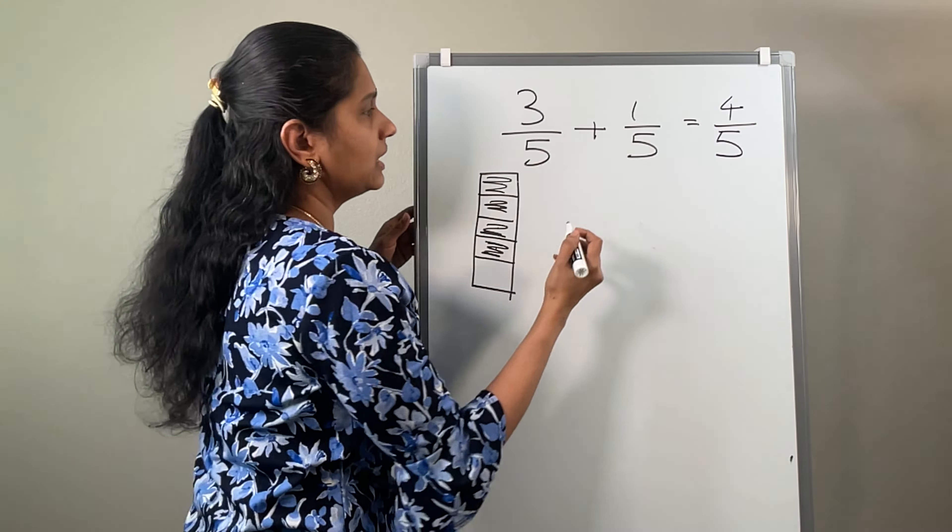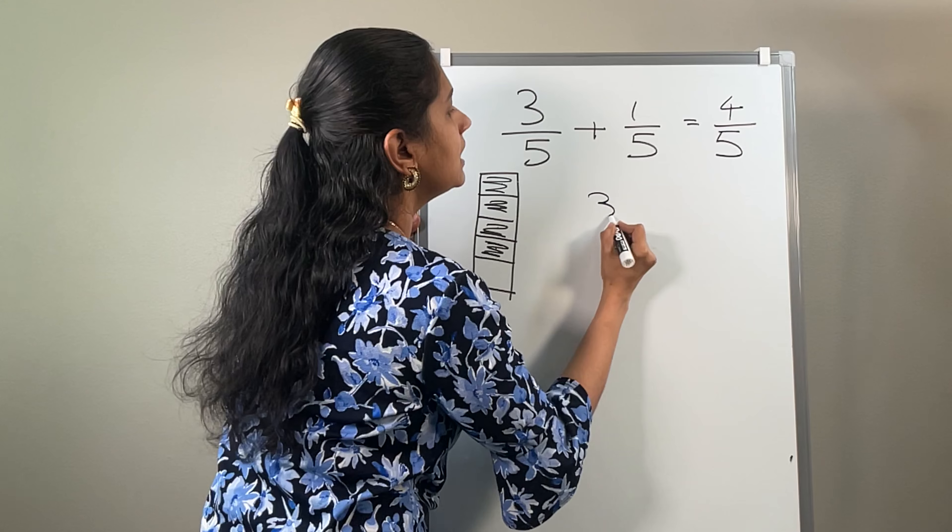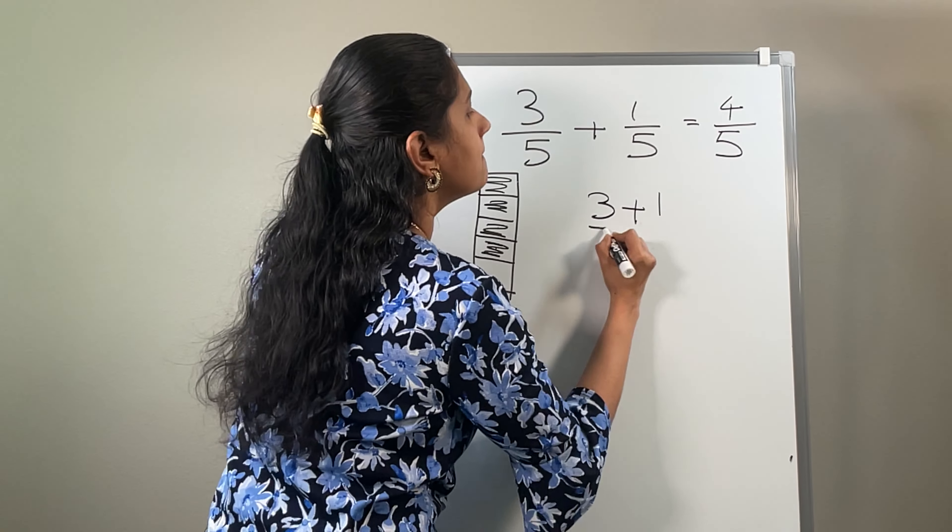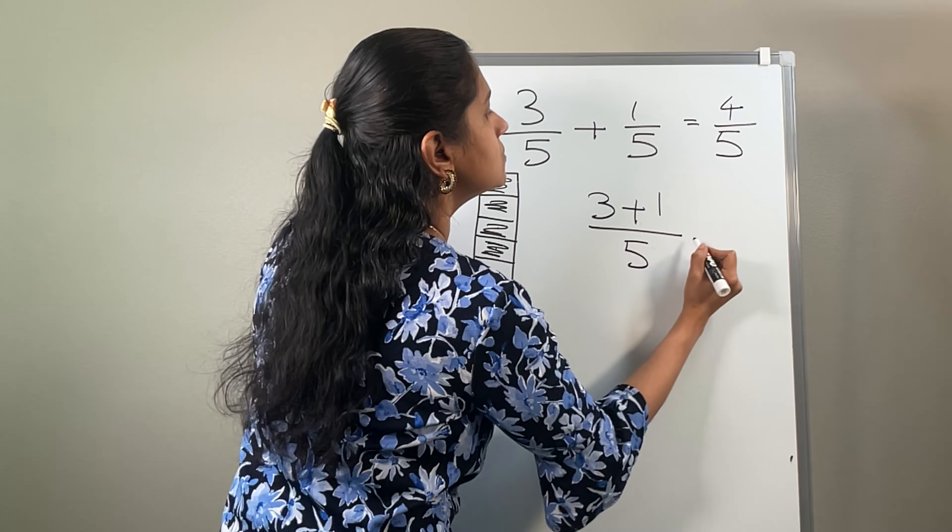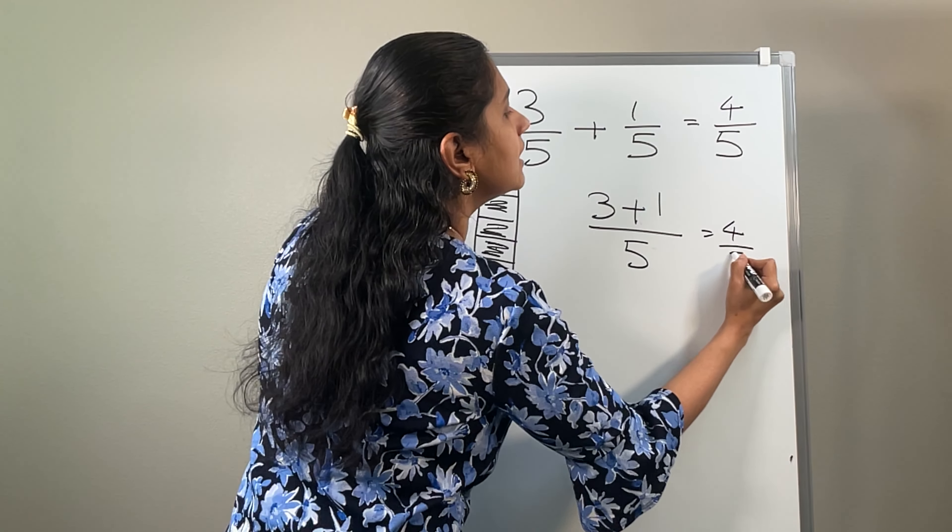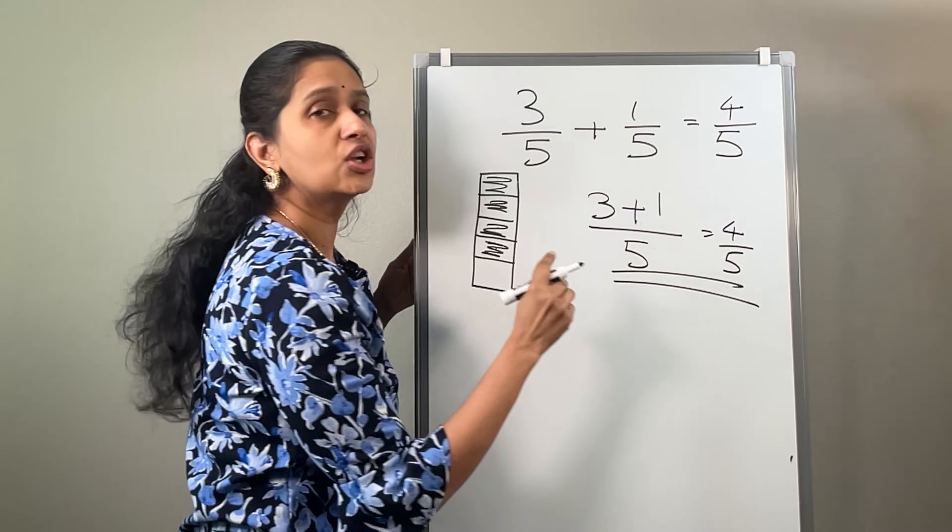4 are shaded among a total of 5 parts. So this can also be written as 3 plus 1 by the common denominator 5, which is equal to 4 by 5. So you can do it in a single shot like that.